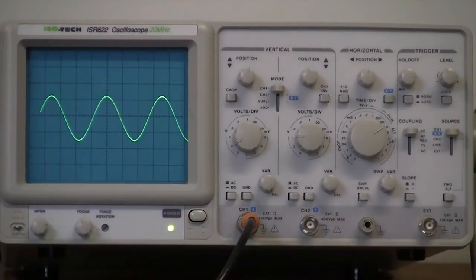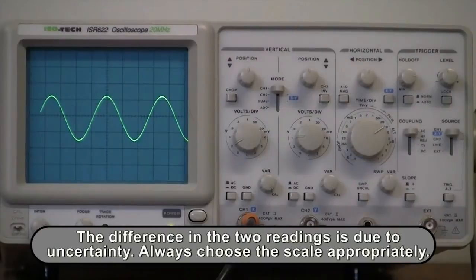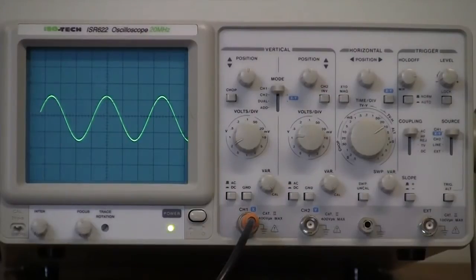The difference in the two readings is due to uncertainty. Always choose the scale appropriately. Make sure that the signal spans as much of the screen as possible, while still allowing you to measure both peaks.